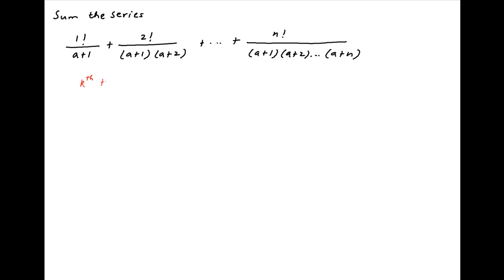We start by noting that the kth term of the given series, let's denote it by tk, is equal to k factorial divided by (a+1)(a+2)···(a+k).